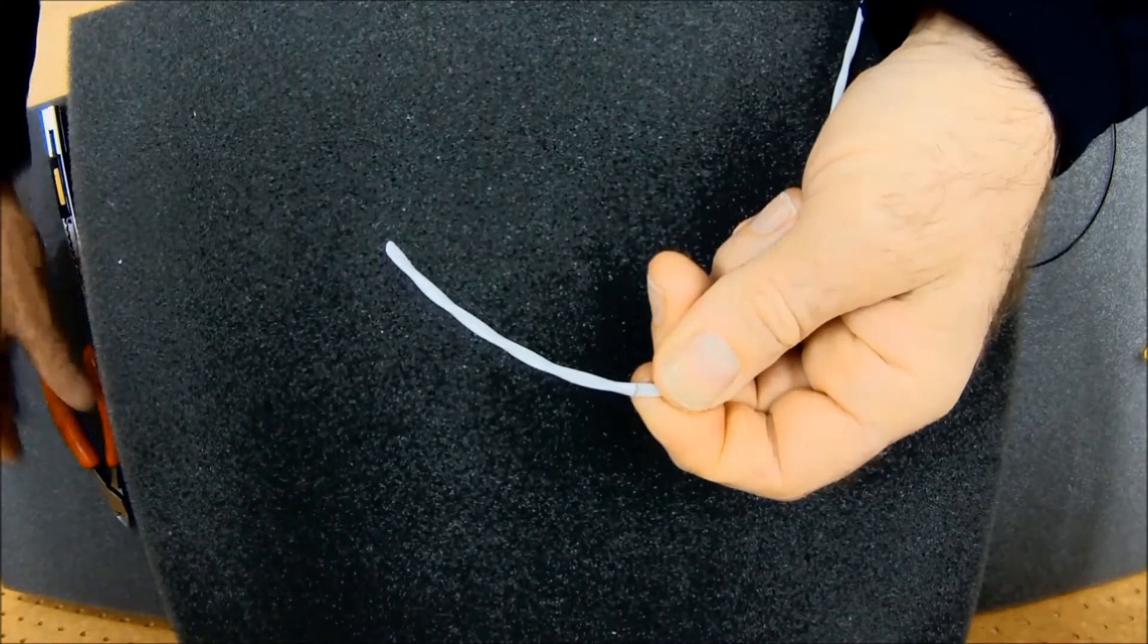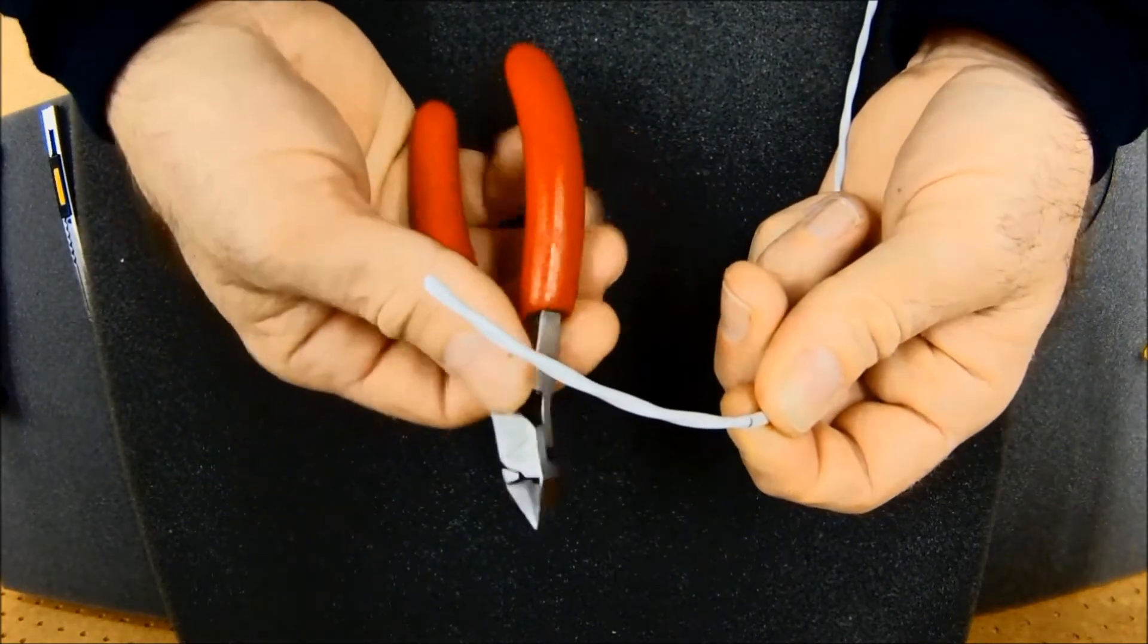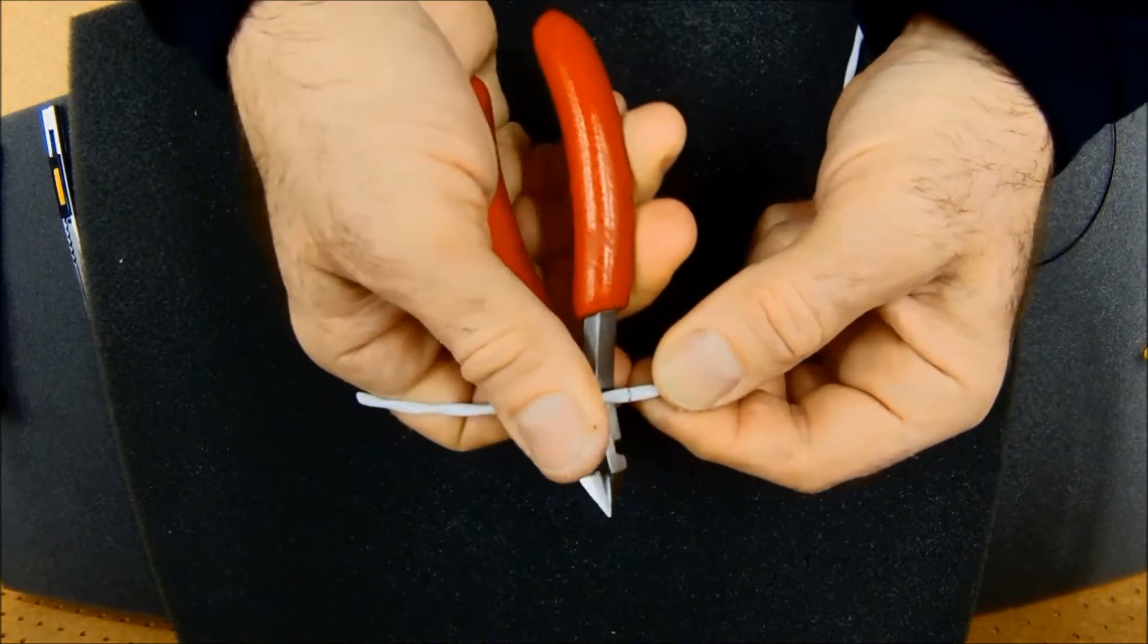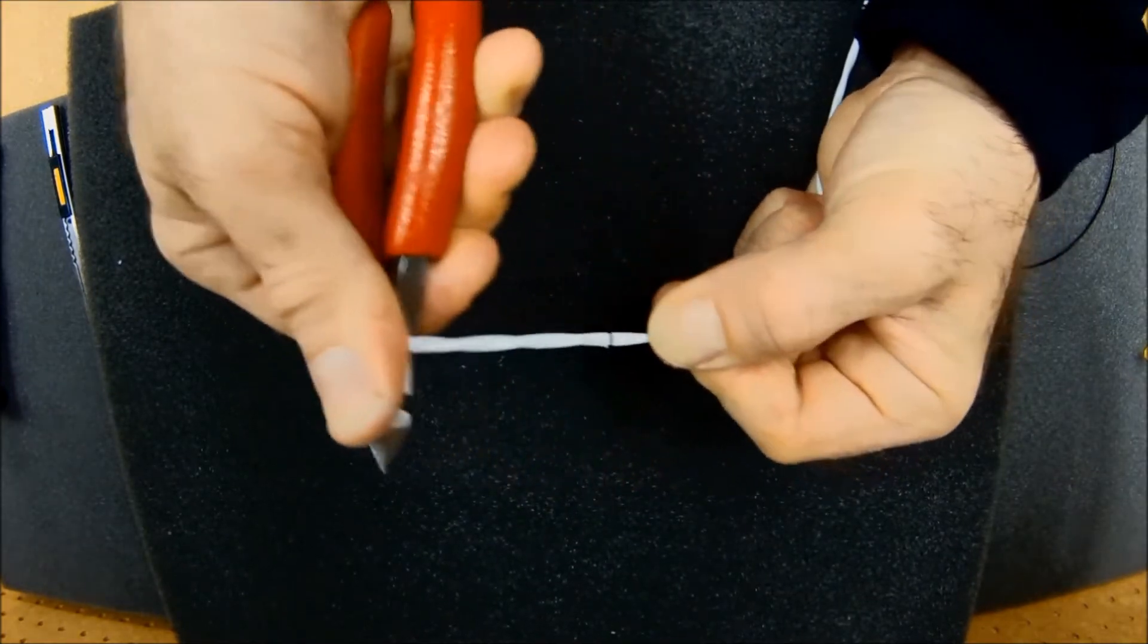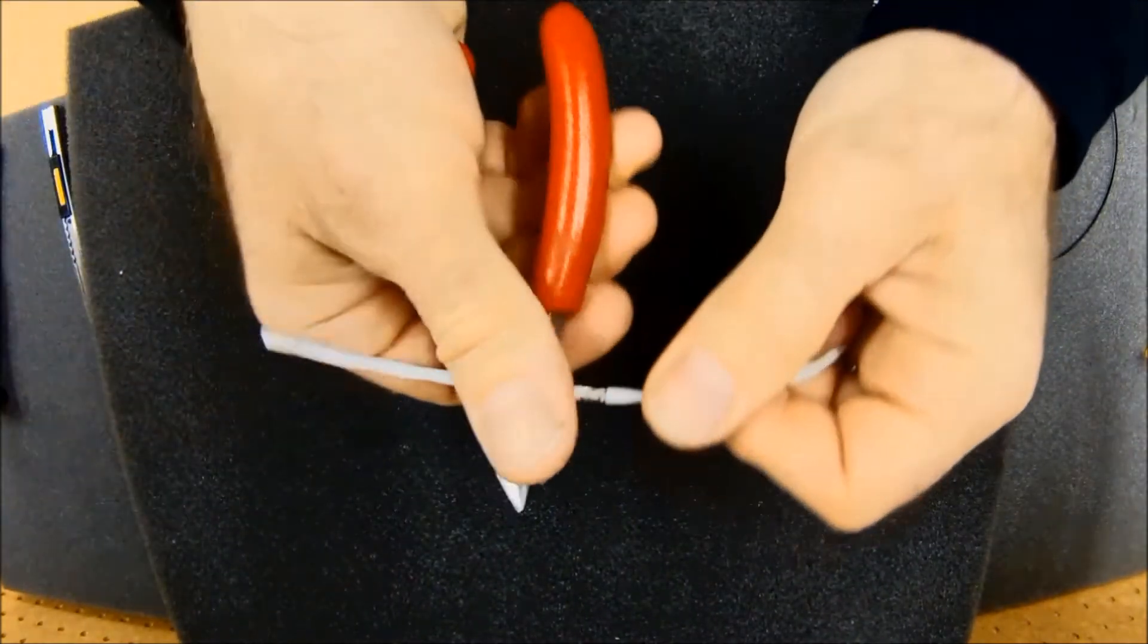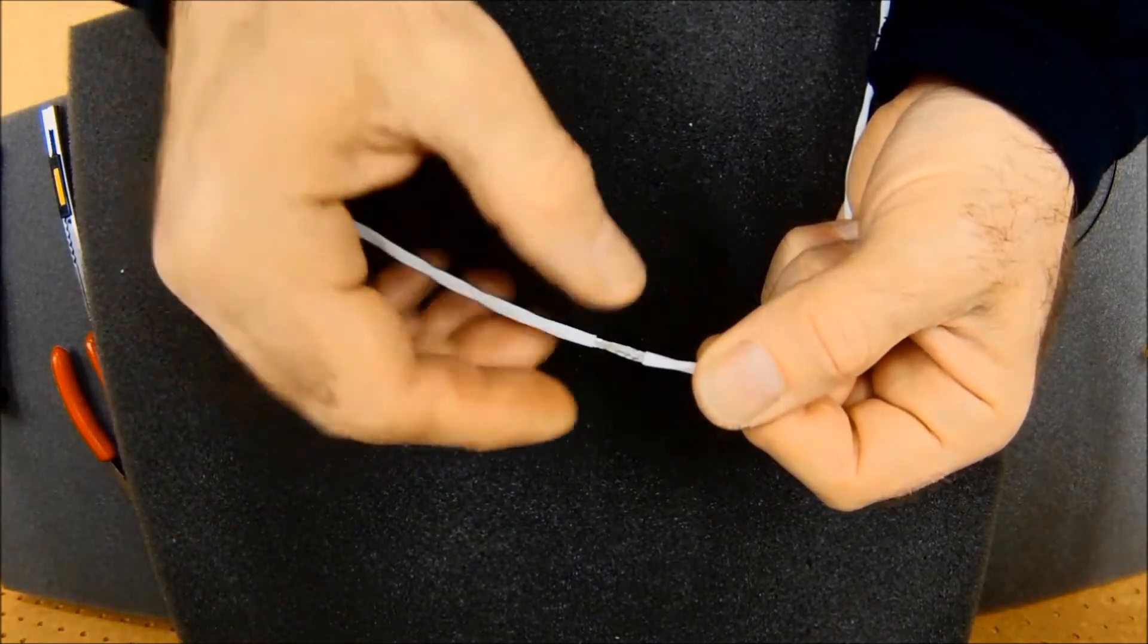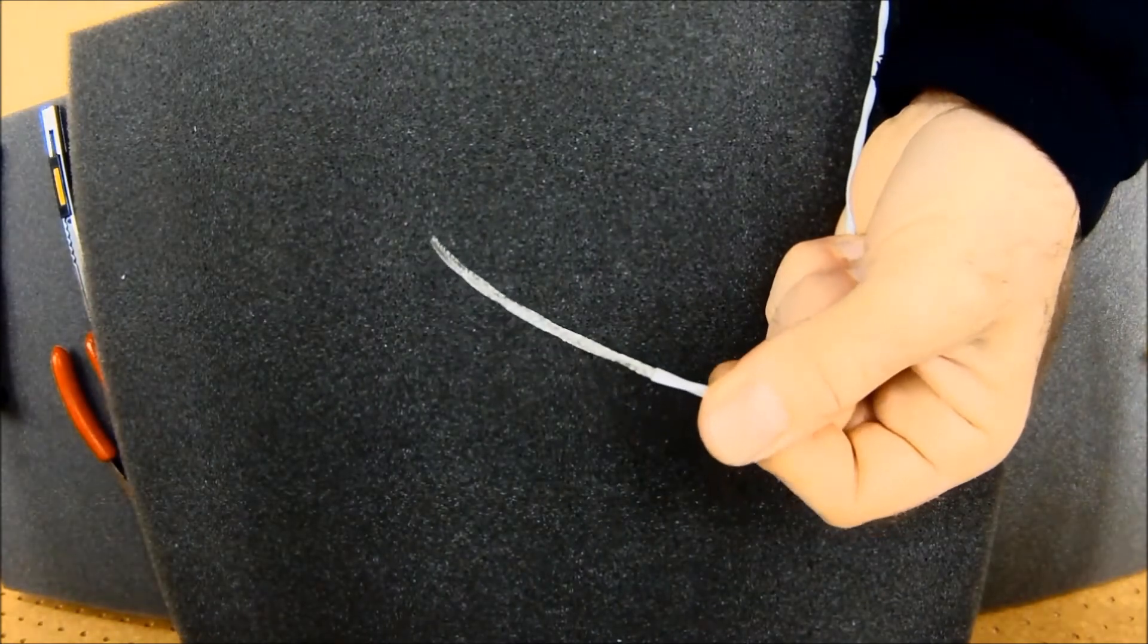Once I have it all loosened up, I like to take some type of tool and bend the wire over the edge of that tool and give it a little scrape. What that does is it loosens up that Tefzel outer insulation from the shield. Once it gets loosened up, I can grab hold of it and pull it off pretty easily.